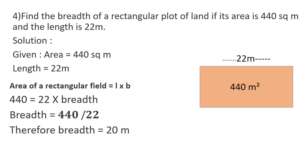Next problem: find the breadth of a rectangular plot of land if its area is 440 square meters and its length is 22 meters. We are given area = 440 square meters and length = 22 meters. Area of a rectangular field is length into breadth, so 440 = 22 into breadth. Therefore breadth = 440 divided by 22, thus the breadth is equal to 20 meters.